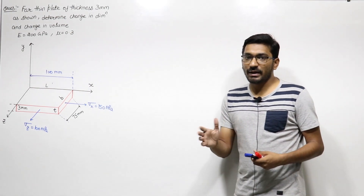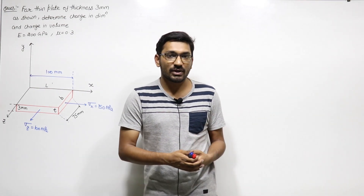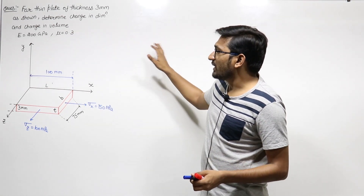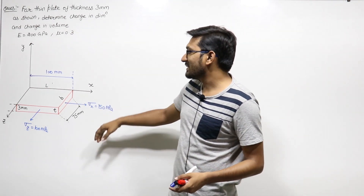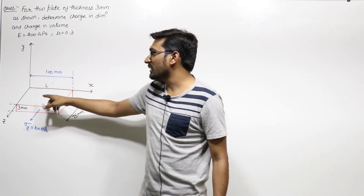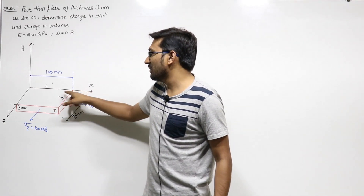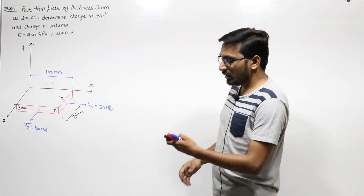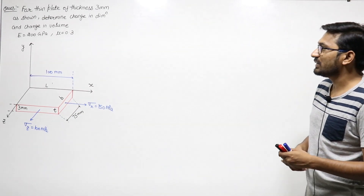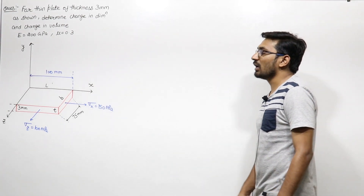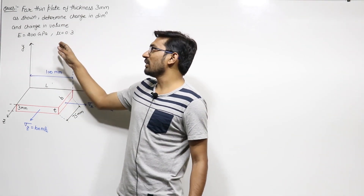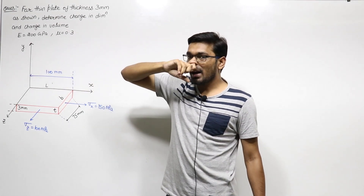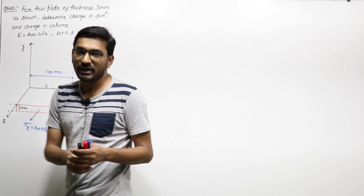Let us solve some numericals on the chapter of stress and strains. The numerical says that for a thin plate of thickness 3 mm, we have to determine the change in dimension and change in volume. The Young's modulus of elasticity is given as 200 giga Pascal and Poisson ratio is given as 0.3.